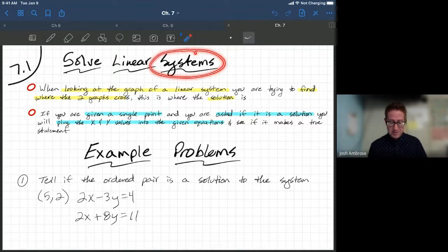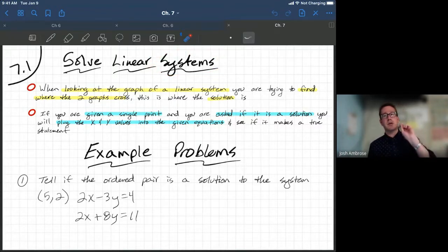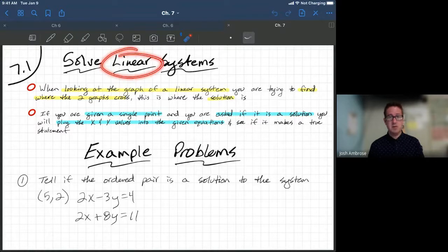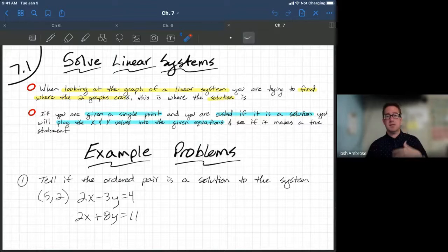And then when we're talking about a system, that means we are using two equations, both graphed on the same coordinate plane. So you got your y-axis, your x-axis. You're going to have two lines. So there's your system. Both of these lines are straight lines. So there's your linear. And you're looking to see, do these lines cross? Do they never cross? And then what does that tell us? That's the basics for a linear system.